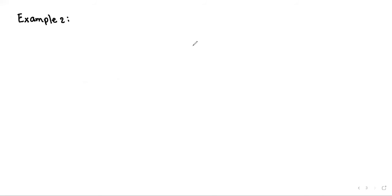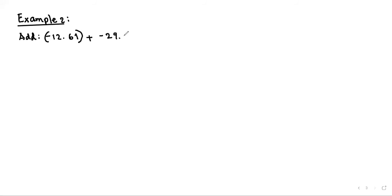Let's have Example 2. For example 2, we are going to see how we can add negative numbers. So add negative 12.61 plus negative 29.754. We can see it is a negative plus a negative, so we have negative 12.61 adding another negative 29.754.